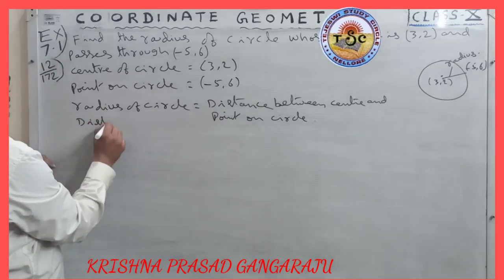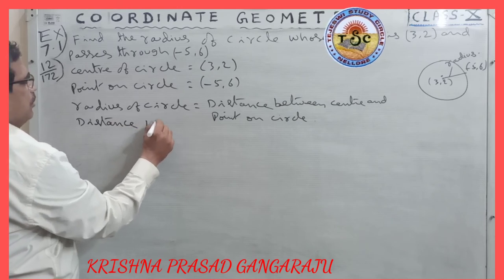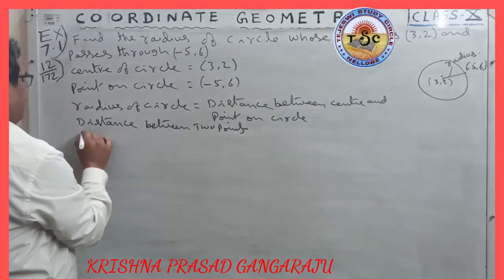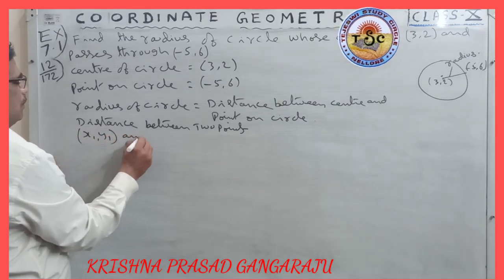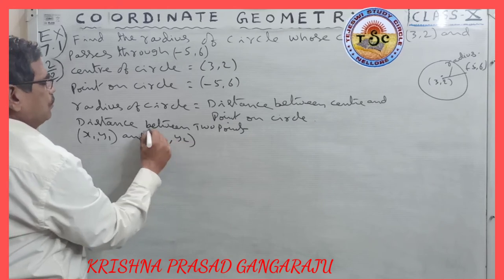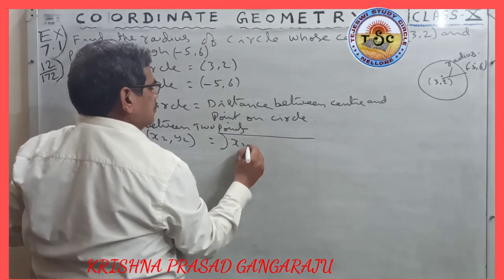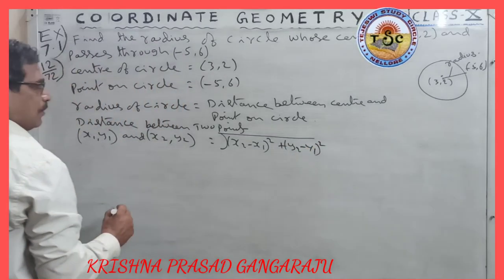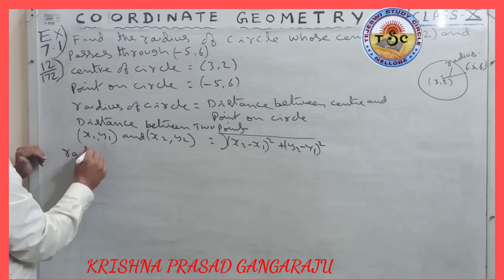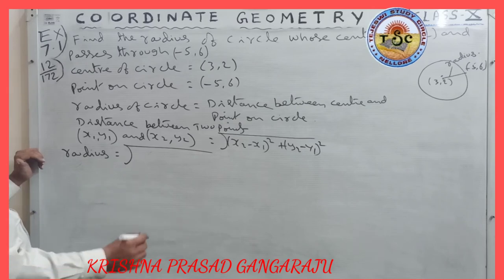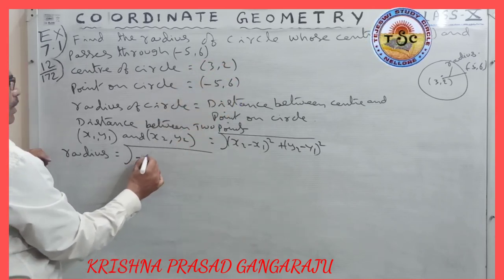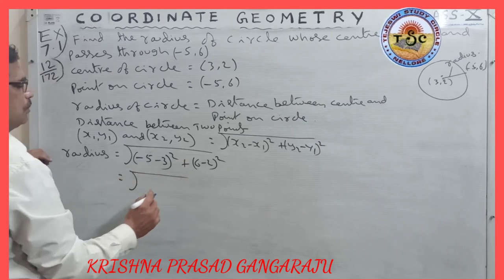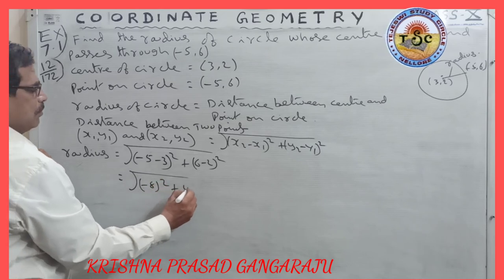Using the distance formula: distance between (x1, y1) and (x2, y2) = root of (x2 − x1)² + (y2 − y1)². So radius = root of (−5 − 3)² + (6 − 2)².